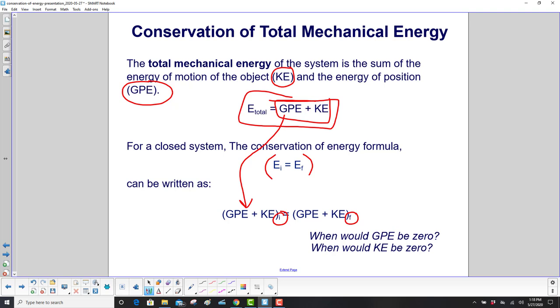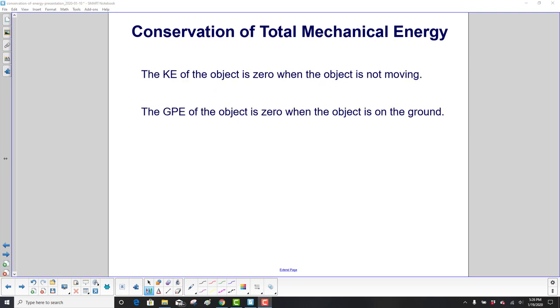So when would GPE be zero? When would kinetic energy be zero? The kinetic energy of an object is zero when the object is not moving. The GPE of the object will be zero when the object is on the ground, that's typically where we choose our GPE reference point as zero.